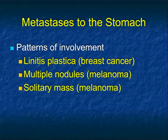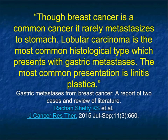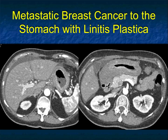The classic presentation for stomach is linitis plastica from breast cancer, but you also can see nodules from melanoma, or solitary masses from melanoma, or renal cell carcinoma. Though breast cancer is a common cancer, it rarely metastasizes to the stomach. When it does, the most common presentation is linitis plastica. It's interesting — linitis plastica very much looks like an infiltrating adenocarcinoma, which makes it tricky. Once the patient has known breast cancer, it makes it fairly easy to come up with the right diagnosis.